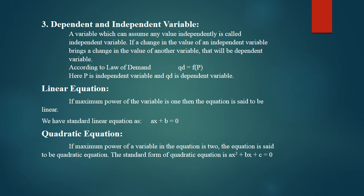For example, if you have two variables and the value of one changes on its own, that is the independent variable. If the other variable's value changes as a result, that is the dependent variable. According to the law of demand, QD is a function of P. Price P is the independent variable — when P changes independently, quantity demanded QD changes as a result, so QD is the dependent variable.